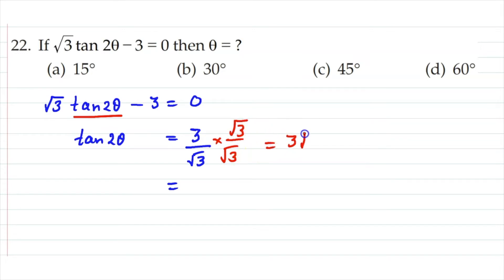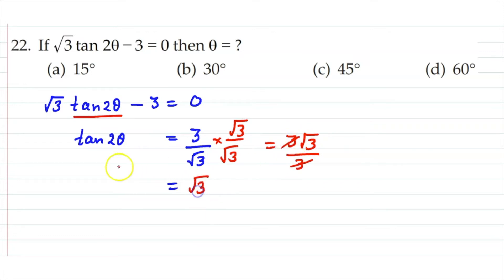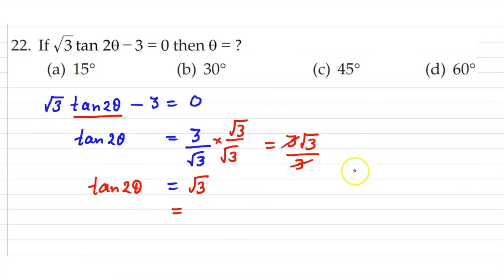We simplify 3/√3: this equals √3. So tan 2θ equals √3. Now, sine, cosine, and tangent — you need to remember these values. Let me advise you on remembering the table.